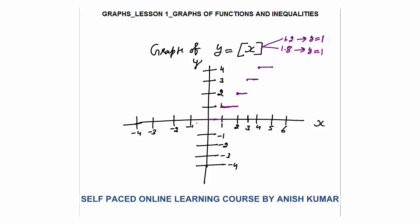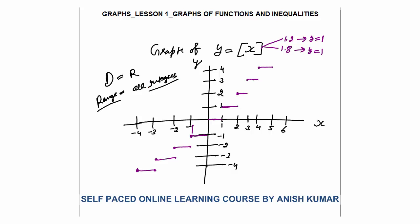This is a step function. Between 0 and negative values, for minus 0.05 the value is minus 1. Between minus 1 and minus 2 the value is minus 2. Between minus 2 and minus 3 it is minus 3. Between minus 3 and minus 4 the value is minus 4. This is the graph of y equals the greatest integer function of x. The domain is all real numbers. The range is very important — the output will always be integers, all integers from minus infinity to infinity. No fractions.